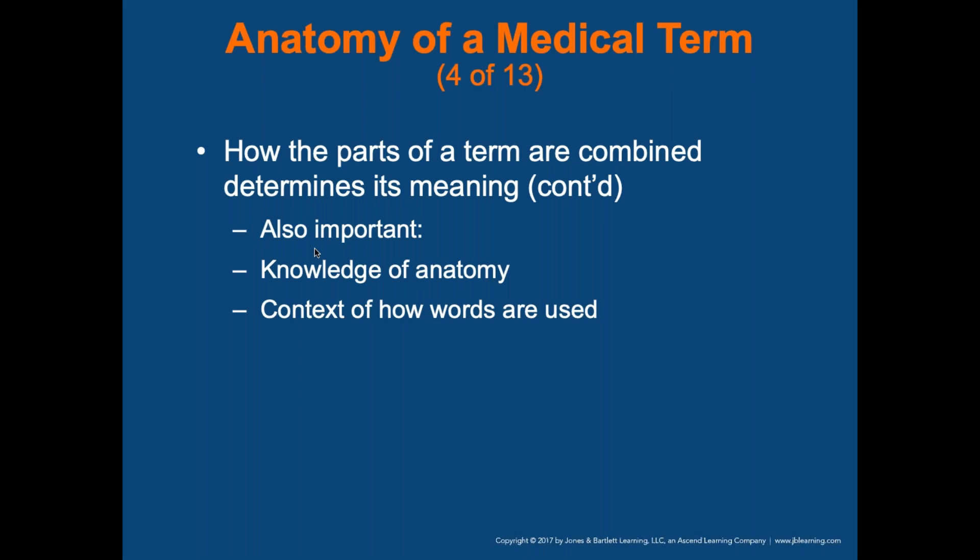How the parts of a term are combined determines its meaning. Terms like 'ilium' versus 'ileum' are pronounced exactly the same but refer to different anatomical parts — I-L-I-U-M versus I-L-E-U-M. Knowing the anatomy and context of how these words are used can help you correctly spell the term in a given situation, whether talking to a patient or documenting with a physician.